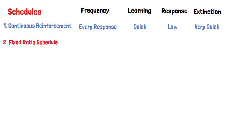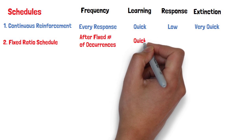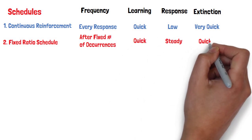Fixed ratio schedules are a type of partial reinforcement. Responses are reinforced only after a specific number of occurrences. This typically leads to a fairly steady response rate.